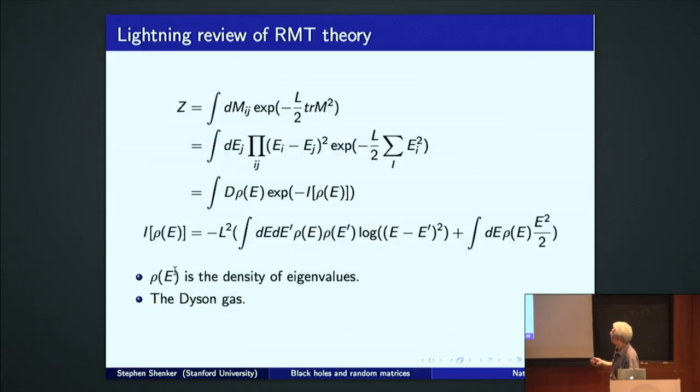Again, this is just the plateau is the non-zero contribution. What's about the rest? Well, what about the rest? So, I have to give you a lightning review of random matrix theory. This is the probability density. You analyze this by going to the eigenvalue basis. E sub i are the eigenvalues of the random matrix. The change of variables produces this famous Jacobian called the Vandermonde determinants squared that makes eigenvalues repel.